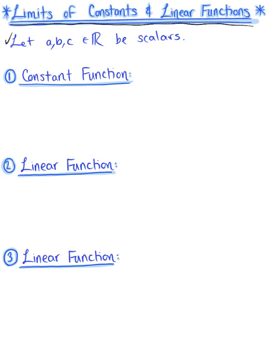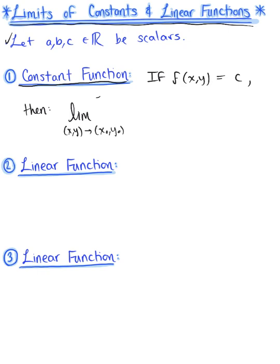We let a, b, and c be scalars — any real numbers. Our first rule is the constant function rule, which is the same as in single variable calculus. If a function f(x, y) is equal to some constant c, then the limit as (x, y) approaches the fixed point (x₀, y₀) of that constant is simply equal to c. The same holds true with functions of two variables.